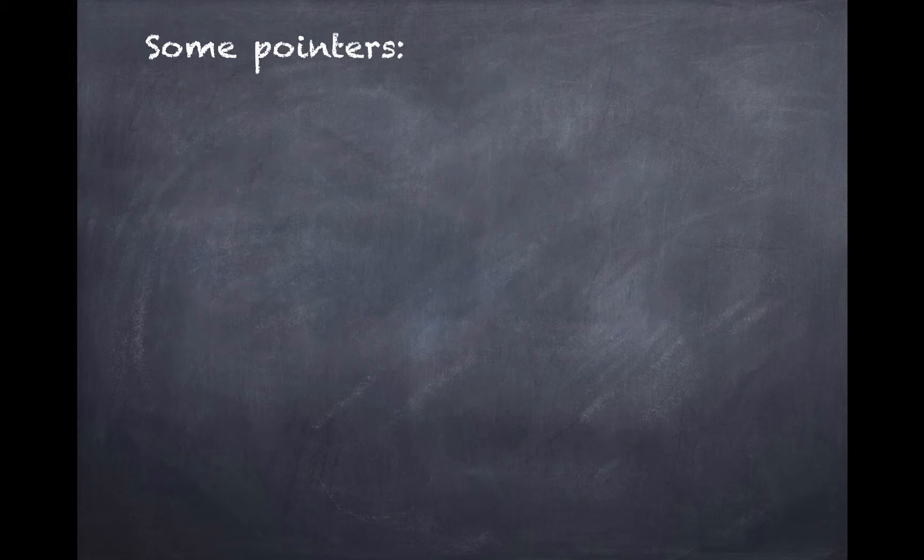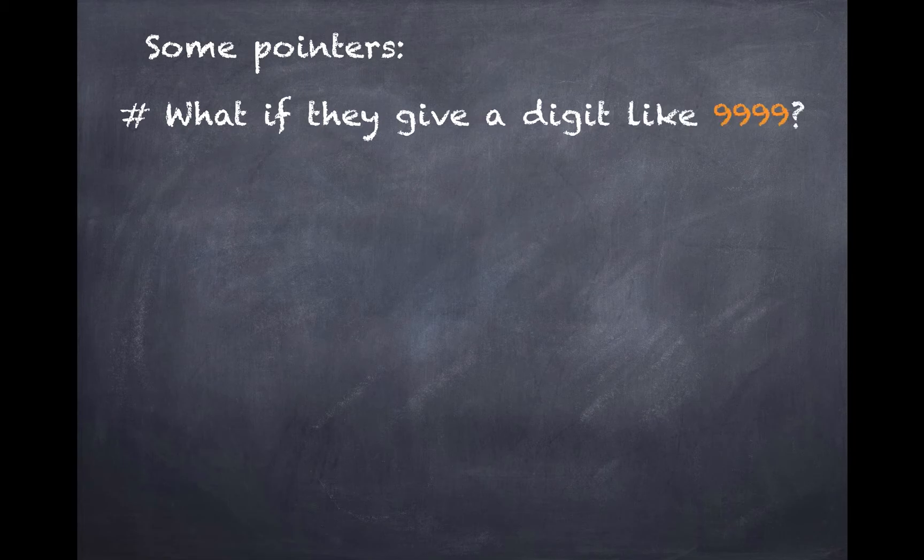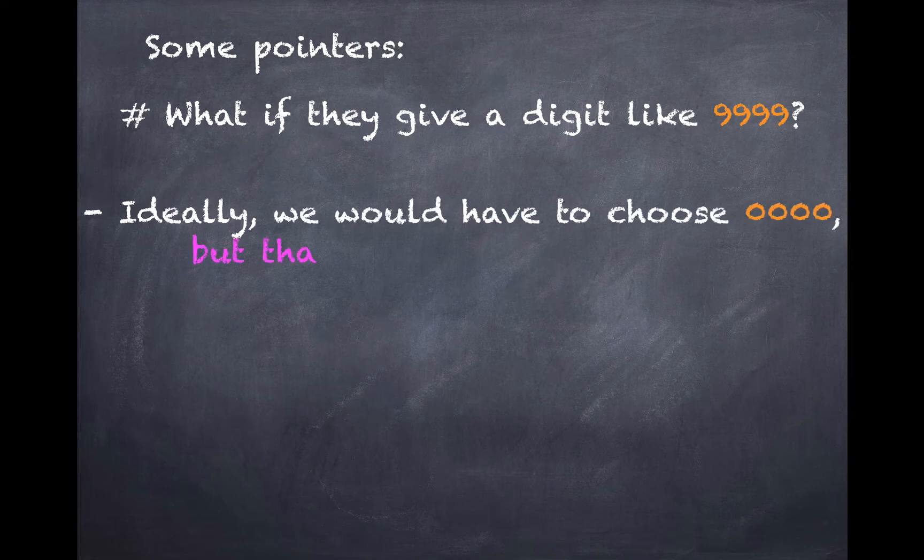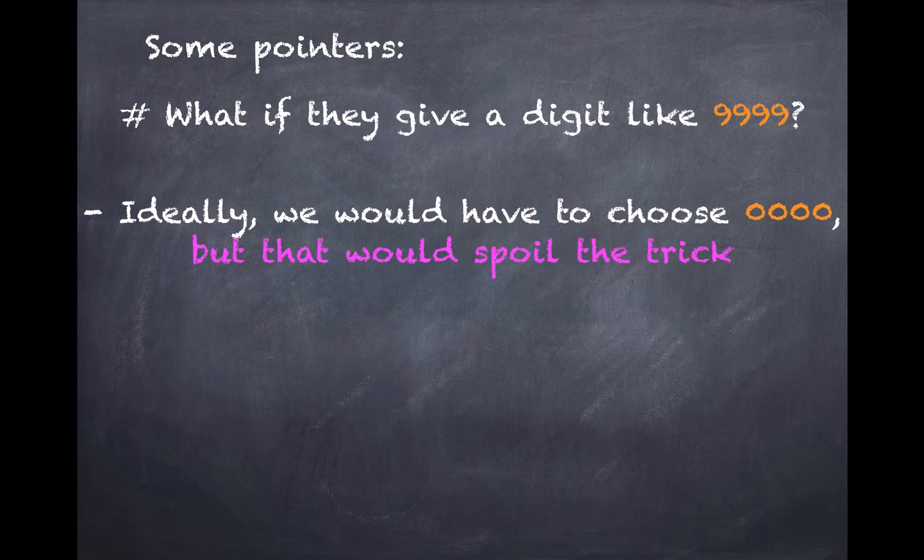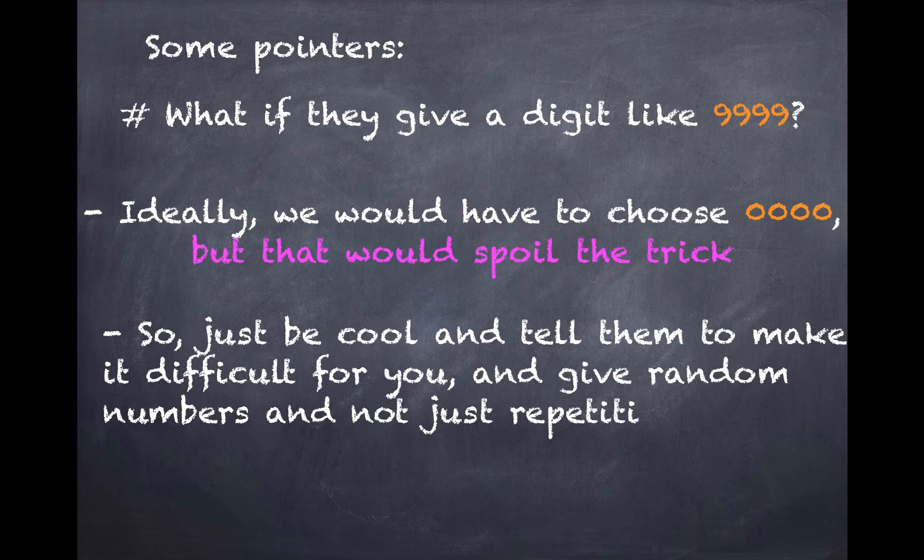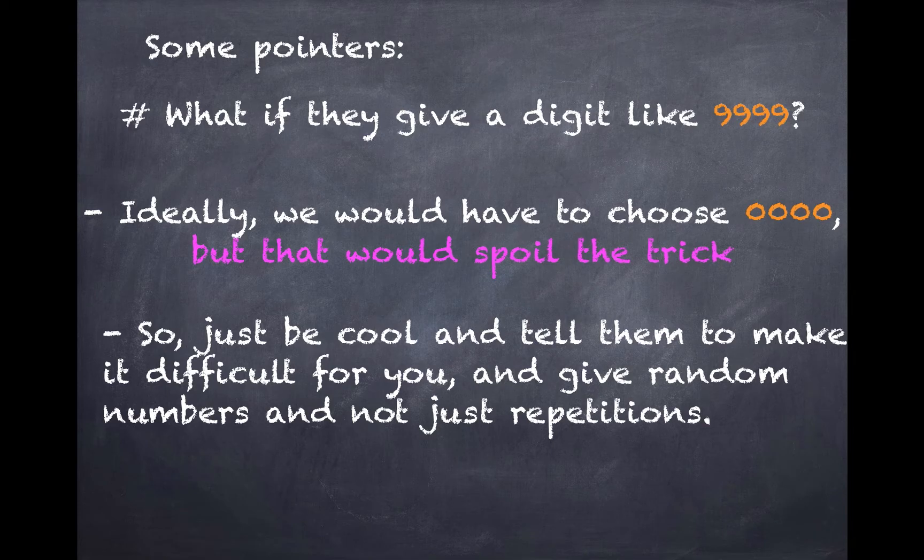So some pointers in doing this trick: what to do if they give you a digit like 9999? Ideally, we would have to choose 0000, but that would actually spoil the trick. So in that case, just be cool and tell them to make it difficult for you and give some random numbers and not just repetitions.